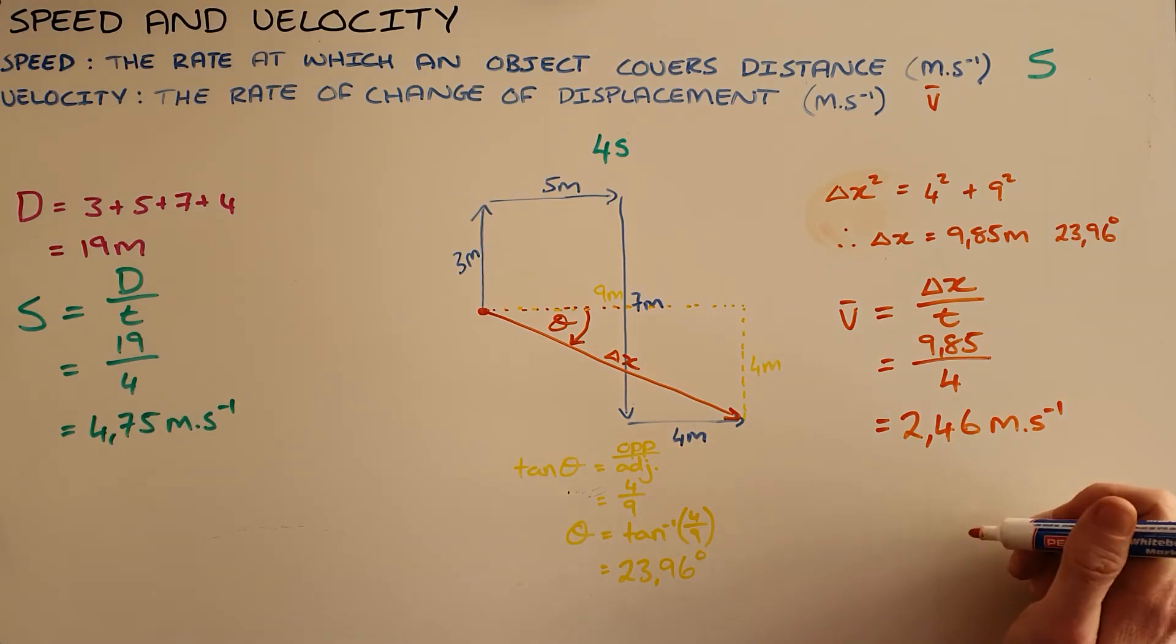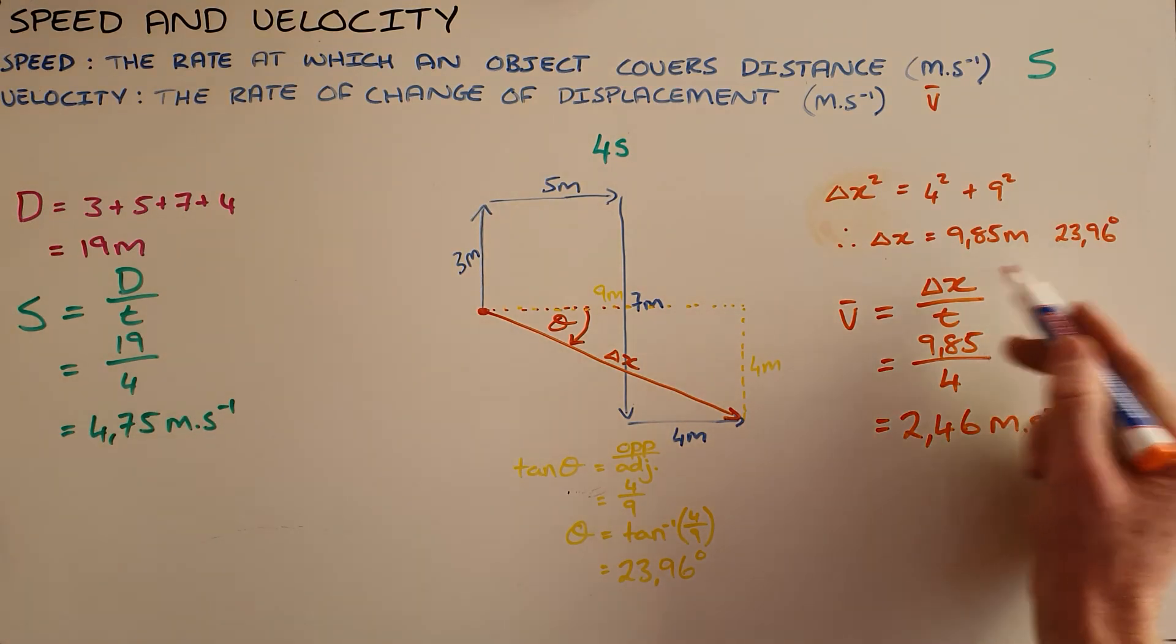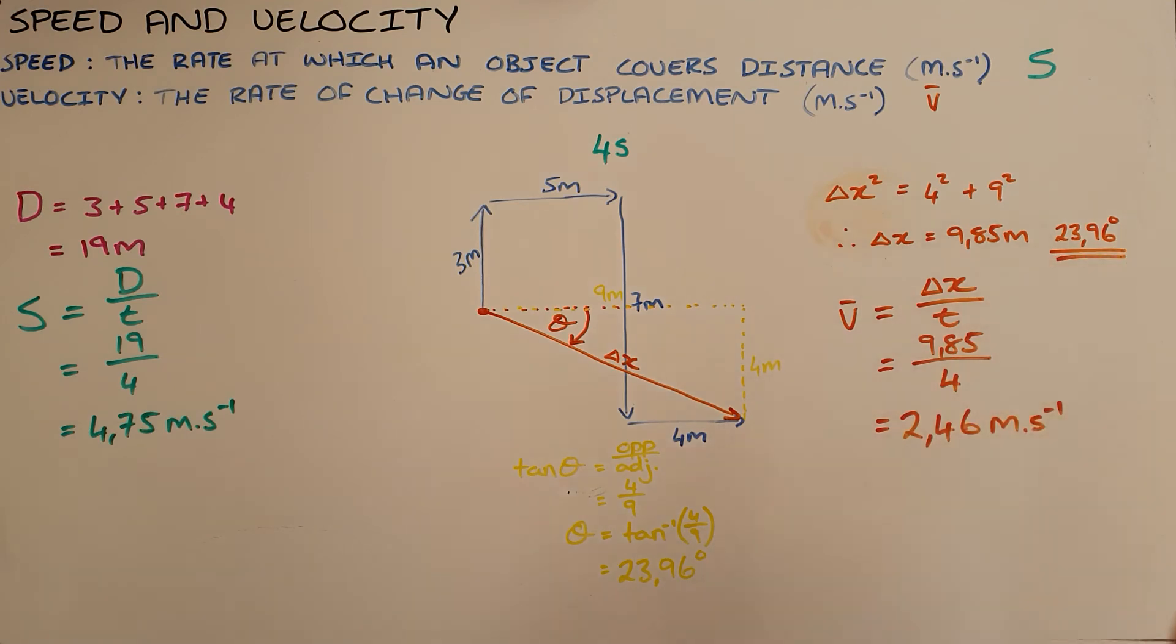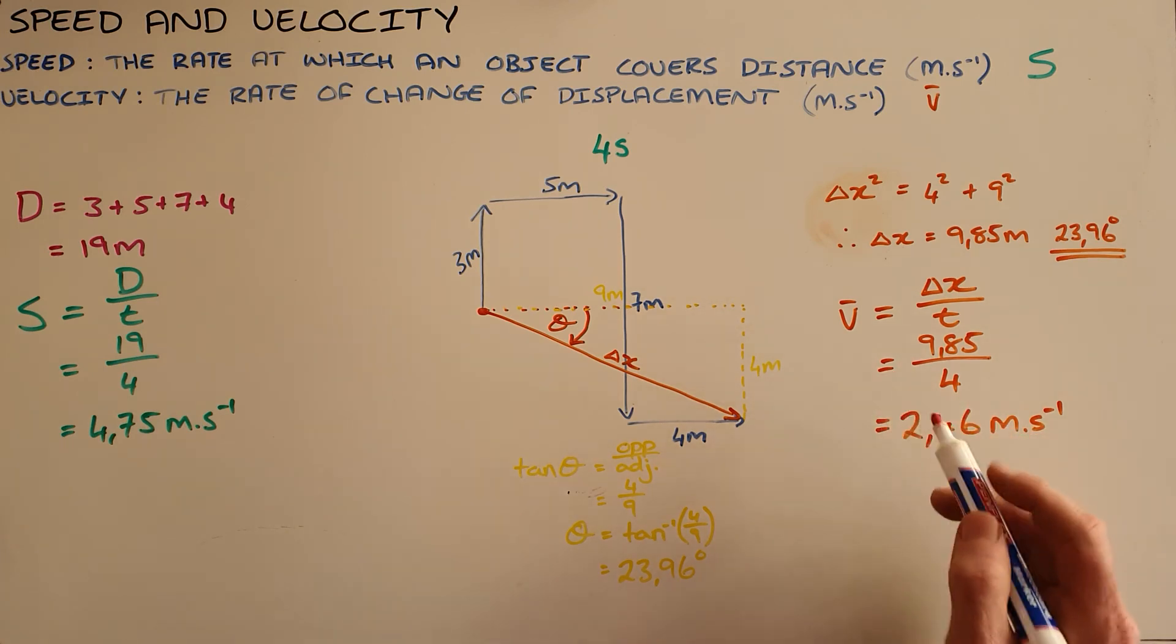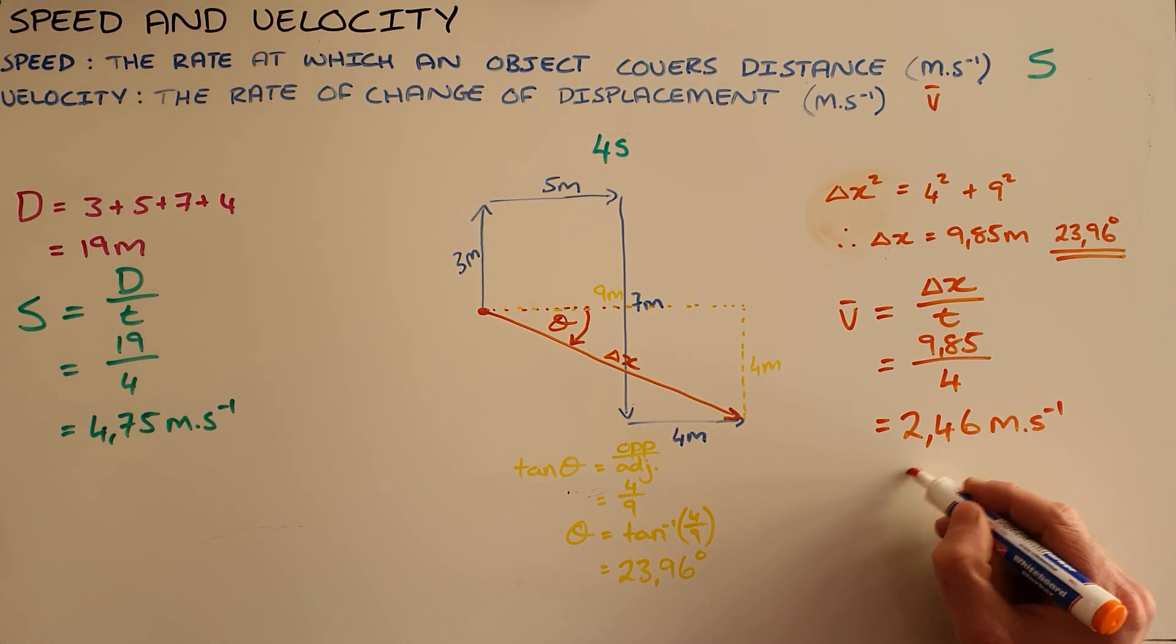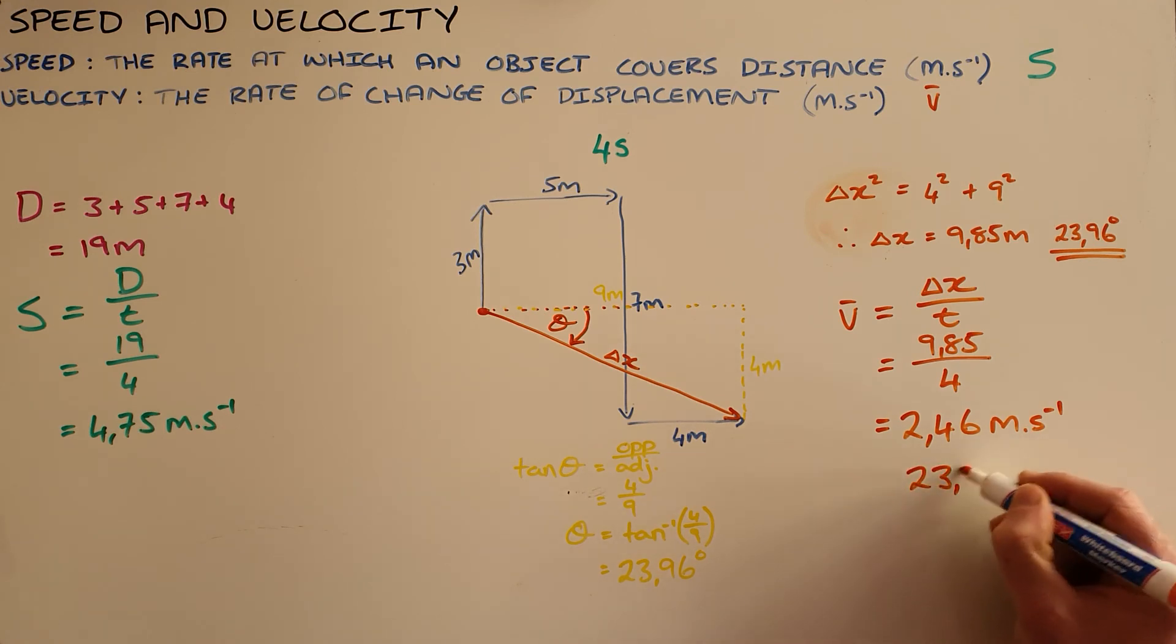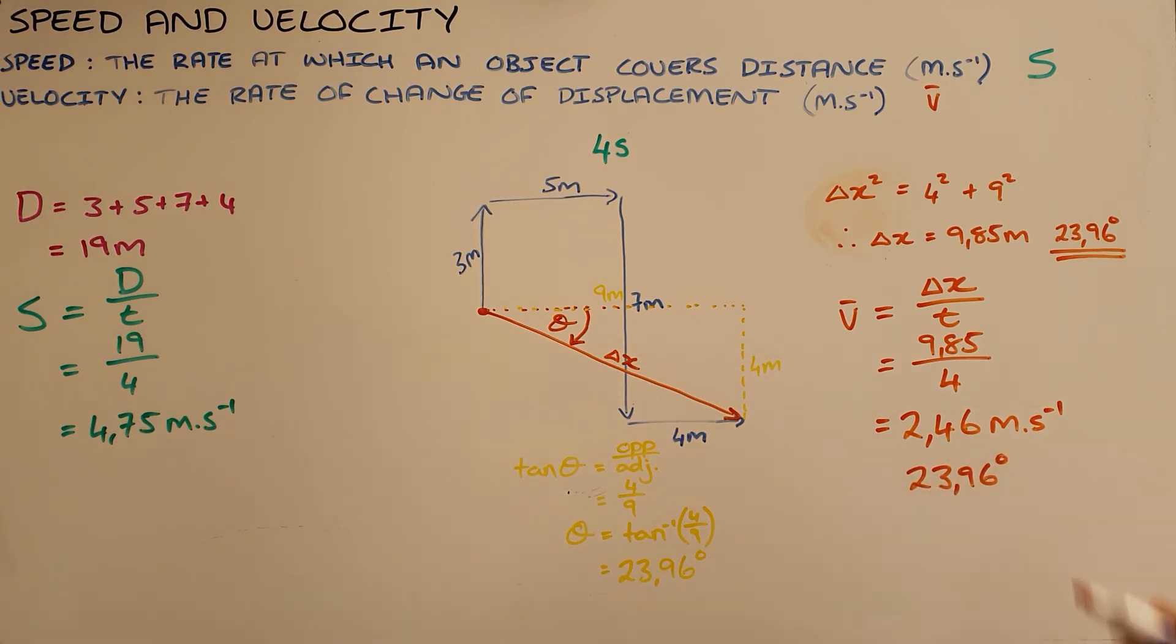The direction of the velocity will be the same as the direction of the displacement, which was calculated using trigonometry. So we say that the final answer here is that the velocity of this object is 2.46 meters per second at an angle of 23.96 degrees.